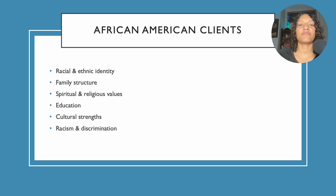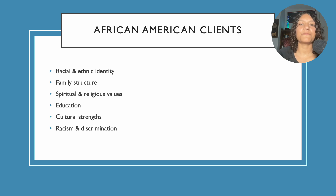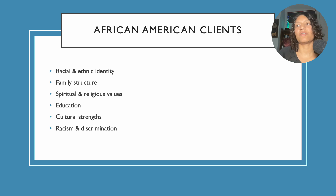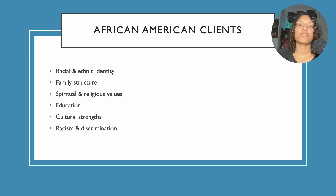For African-American clients, there are several different factors that might be playing a role, covered in more detail in your textbook. Blood relatives and close family friends — the family structure might be slightly different. As therapists, we'd want to clarify who's living in the home and who helps with childcare, because extended family or friends who aren't blood relatives might be considered family. Someone might say 'that's my uncle, my aunt, my brother, my sister' when they're not blood, but they're considered family relationships in that sense.